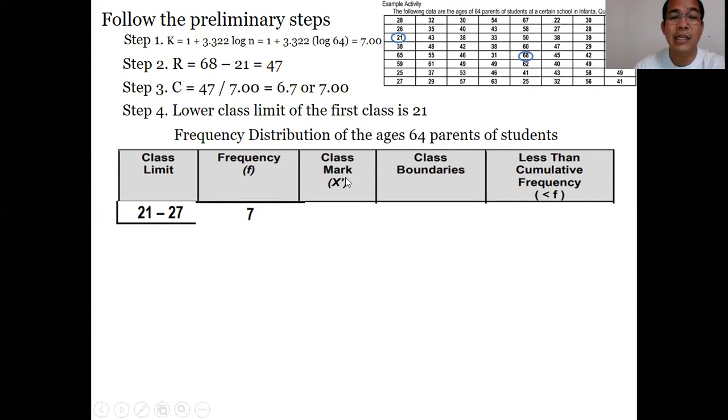So what would be the entry for frequency? We will count how many numbers fall from 21 to 27 in the given data set. There are 7 scores from 21 to 27. For the class mark, you just add 21 and 27 to get 48, then divide by 2 to get 24. For class boundaries, subtract 0.5 from 21 and add 0.5 to 27, giving 20.5 to 27.5. The less than cumulative frequency is 7.